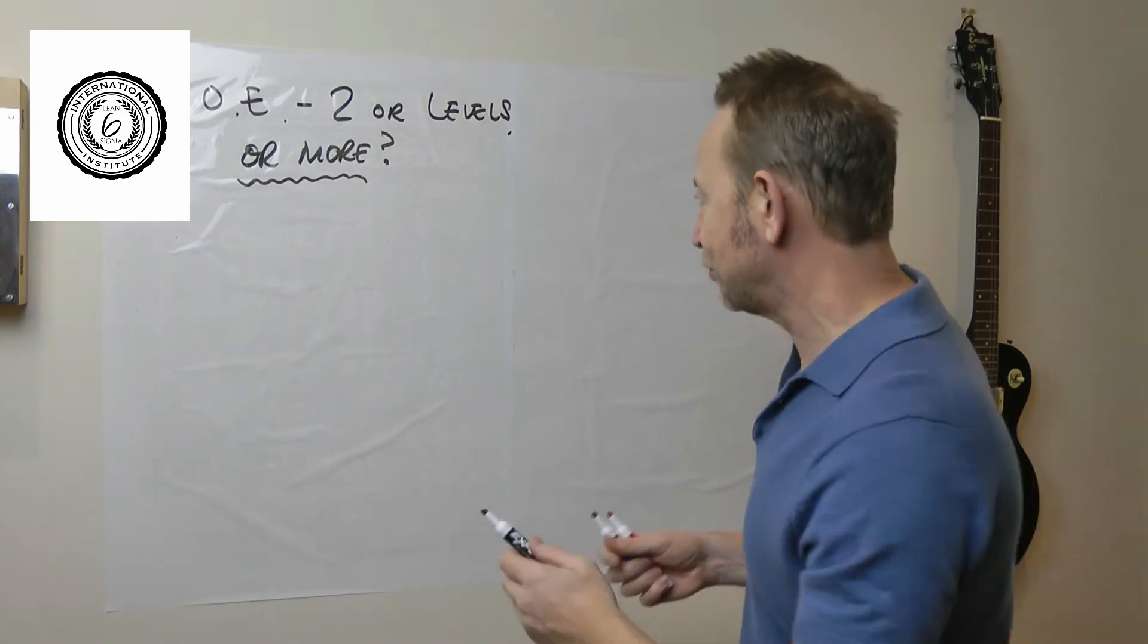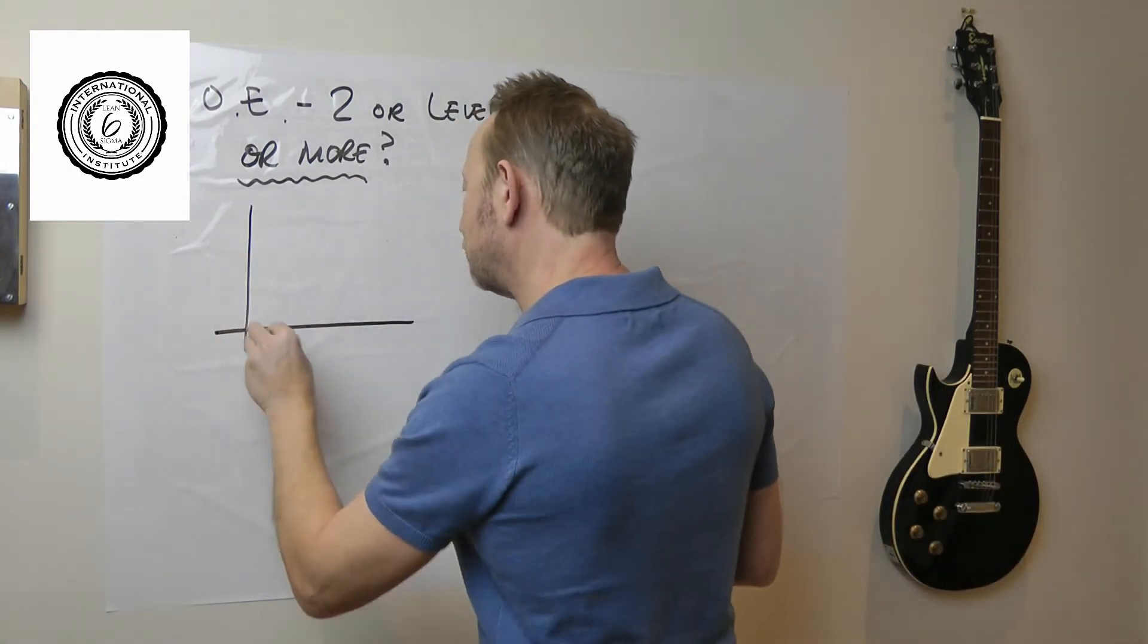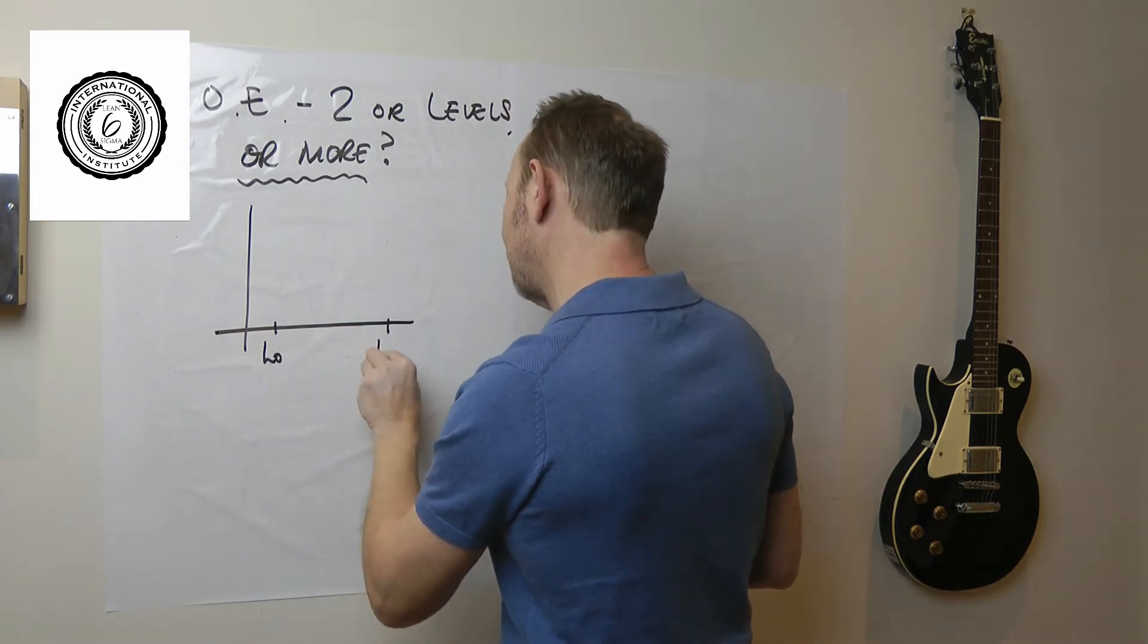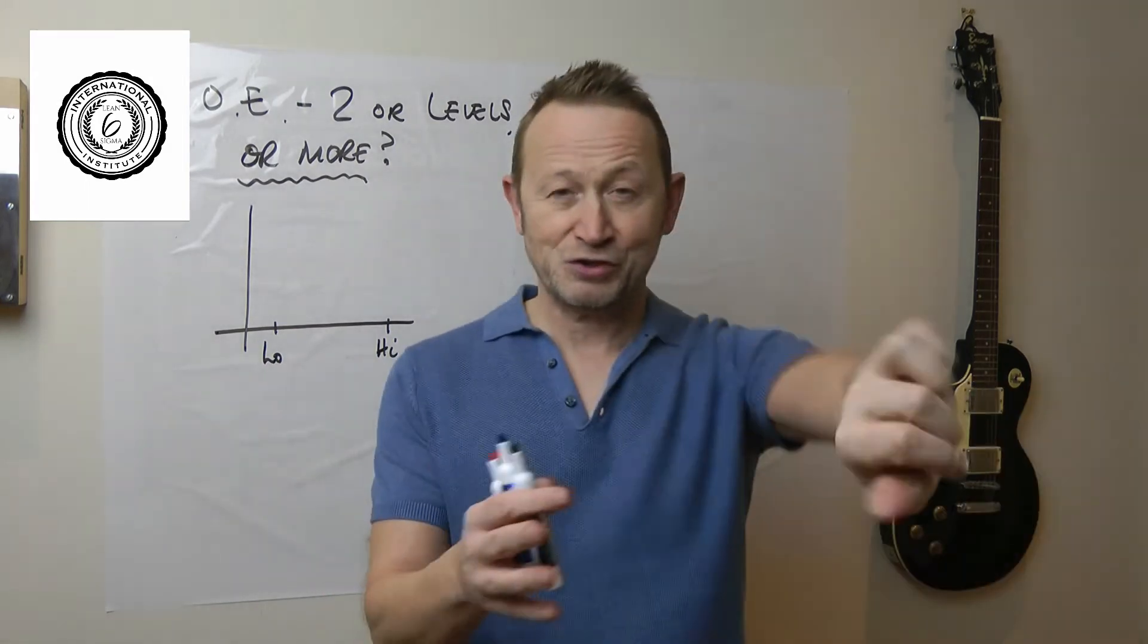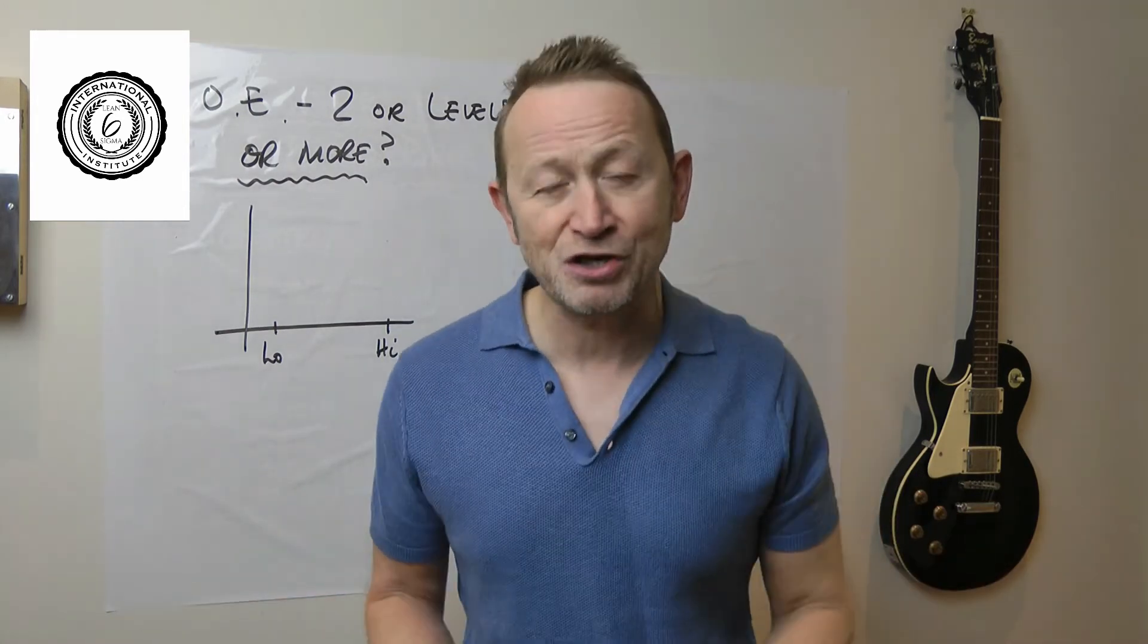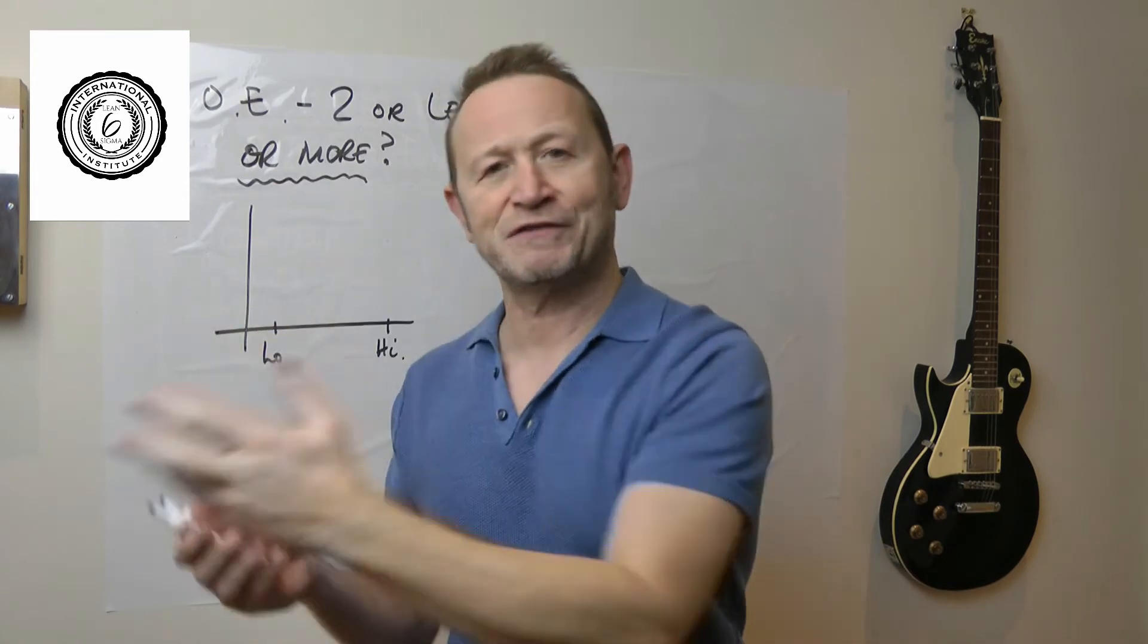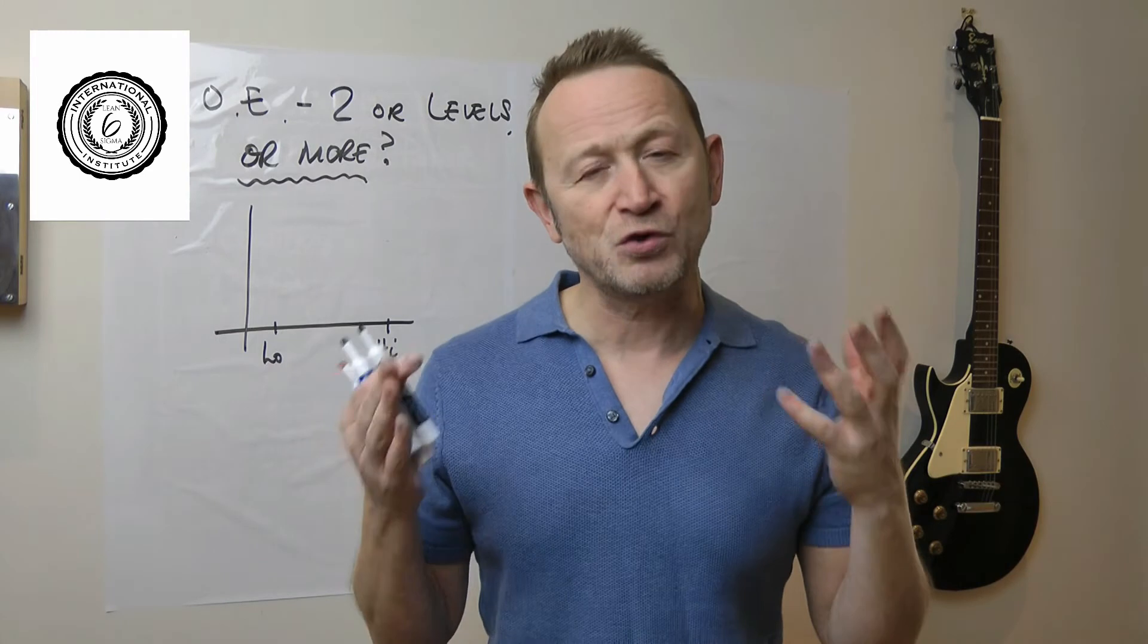So let's just think about this for a second. You have a dial on your process, you are going to test it in a low position, you are going to test it in a high position, so this could be time, it could be temperature, it could be pressure, you can put it anywhere. Let's say it's time, you could test it at 20 seconds, 30 seconds, 40 seconds, 50 seconds, 60 seconds, you can test it in those places if you wish.